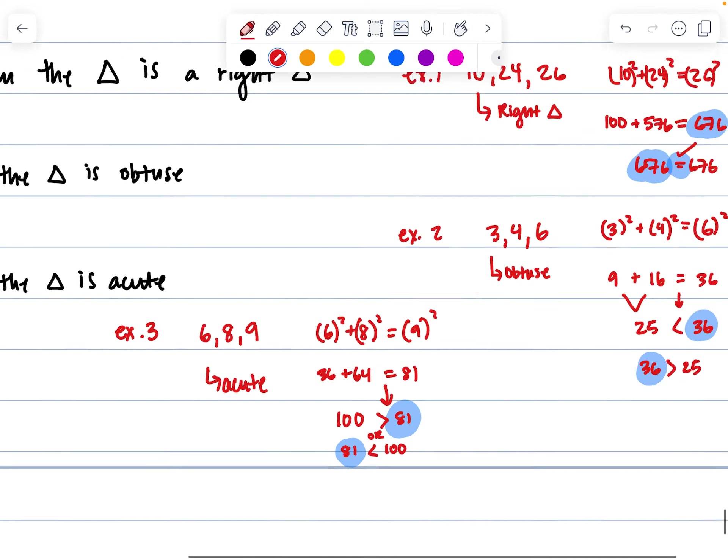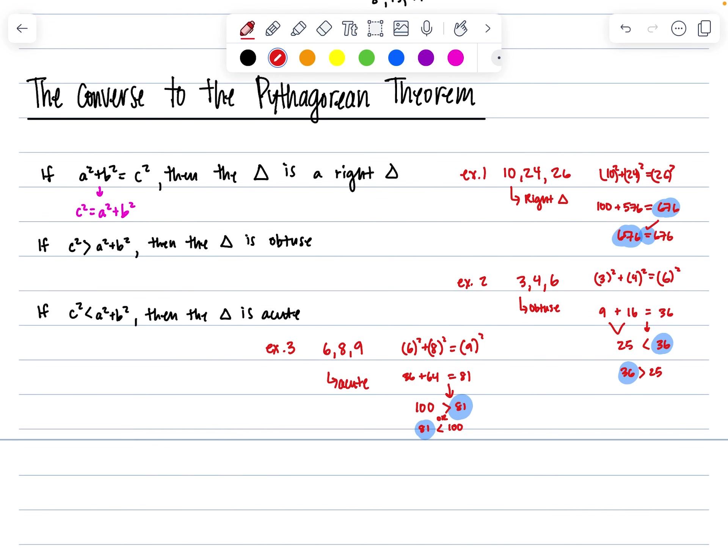So that is how you determine if a triangle is acute, obtuse, or right, just by using the Pythagorean theorem and using some inequalities. All right, if you do have any questions, please let me know, and I'll see you in the next one. Bye!